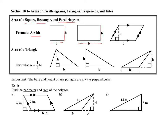For a parallelogram, it's base times height. To help you understand the area of a parallelogram, we're going to take this triangle, attach it over here on this side, and what do we get? We get a rectangle. That's why it's the same formula.